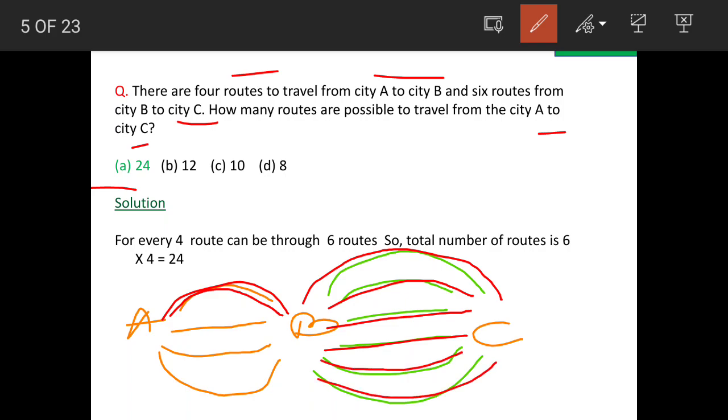So, from the first route, he has 6 options. So, that means one route is giving him 6 choices. So, if there are total 4 routes, then how many choices are there? 4 into 6 is equal to 24 and this is our answer.